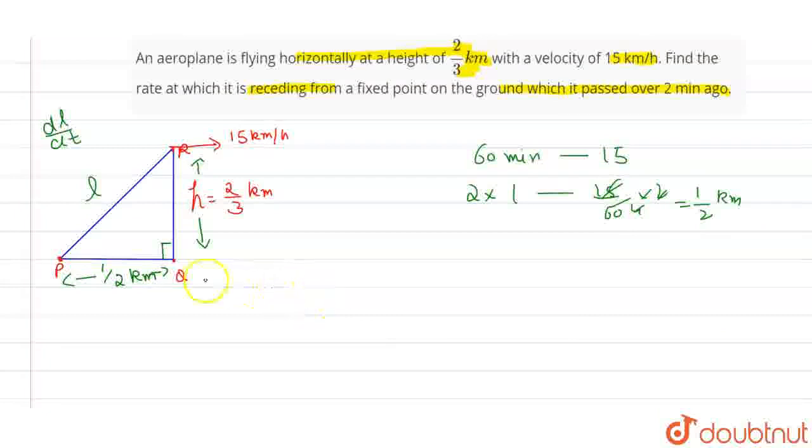So now what we will do to find dl by dt, we know that we can write this one as l squared equals h squared plus x squared. To find dl by dt, we need to differentiate this equation. But before this, we can calculate the value of l.